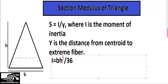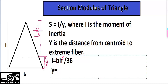The y distance is also known to us. The centroid distance from the top is H/3, while the centroid distance from the bottom fiber is 2H/3. So in this case, the y distance will be equal to 2H/3.